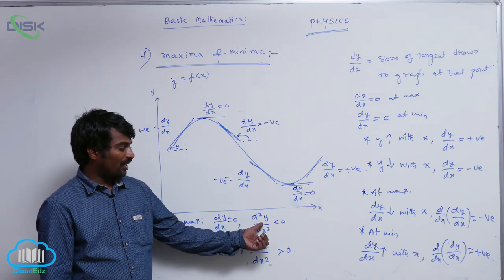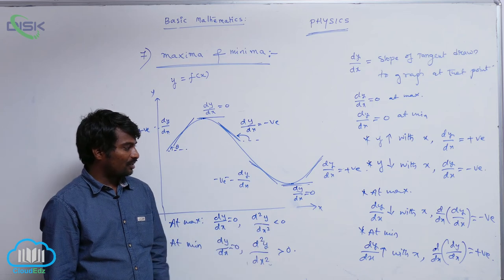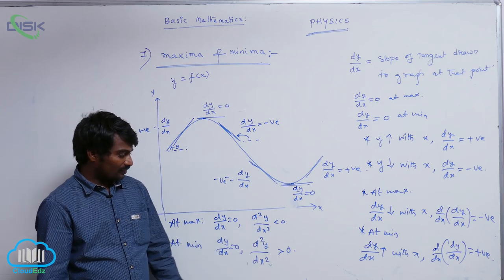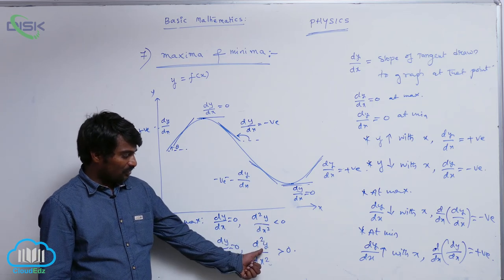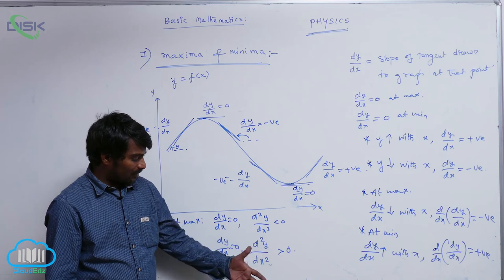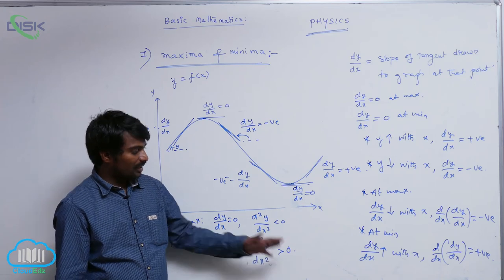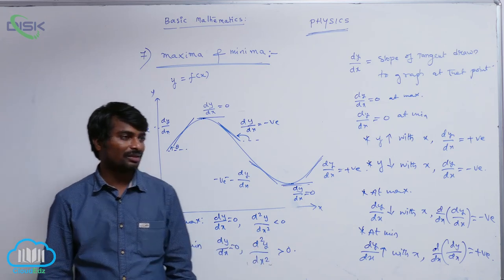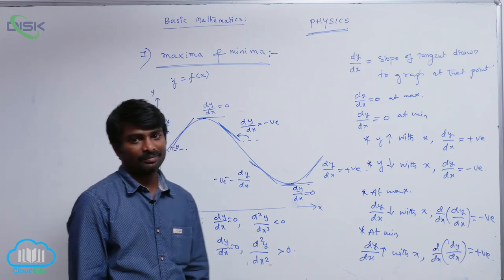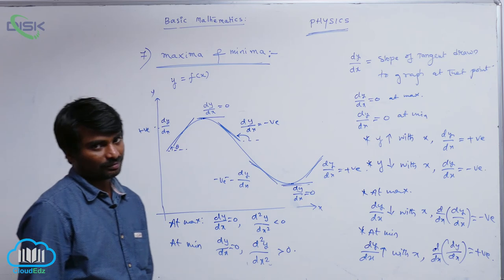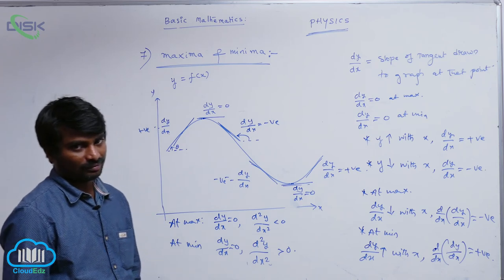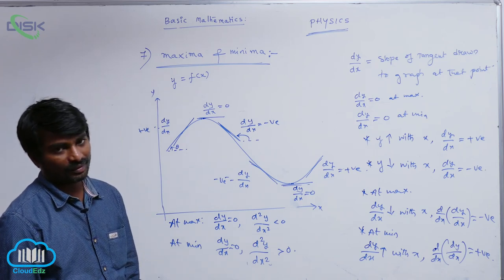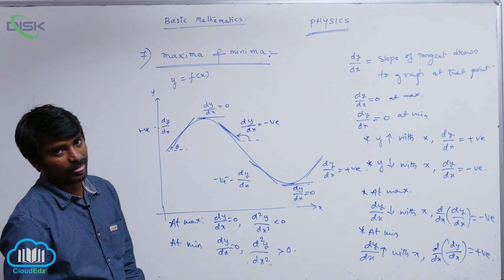If the double differentiation value is less than 0, we conclude that it is maxima. And if the double differentiation value is greater than 0, then we conclude that it is minima. Thank you.